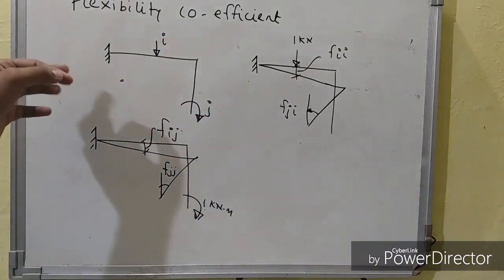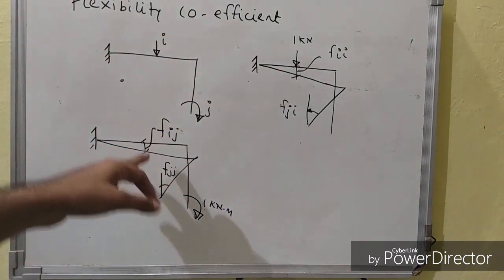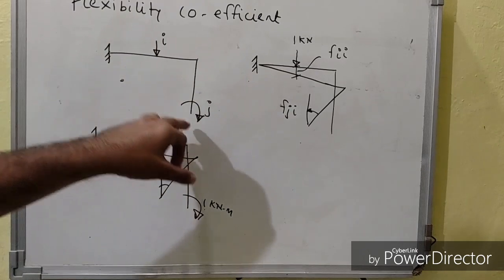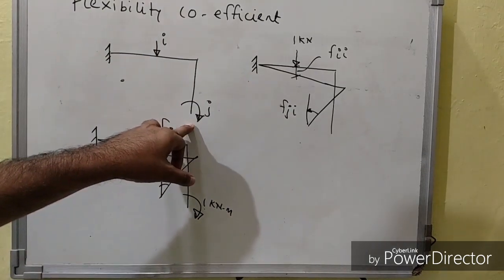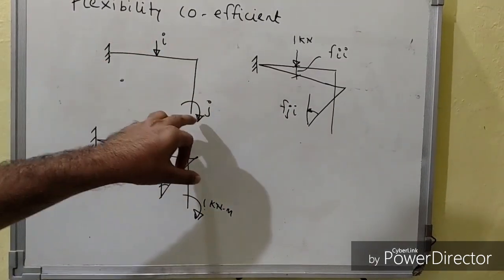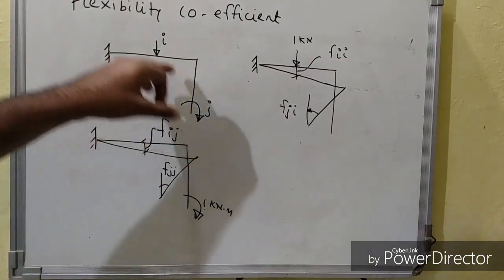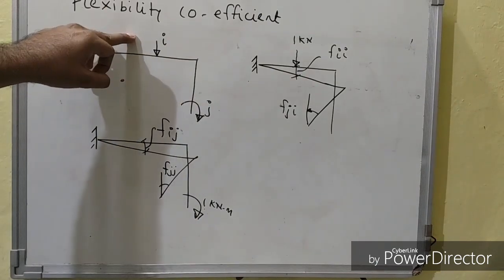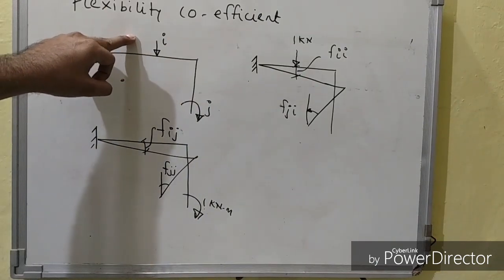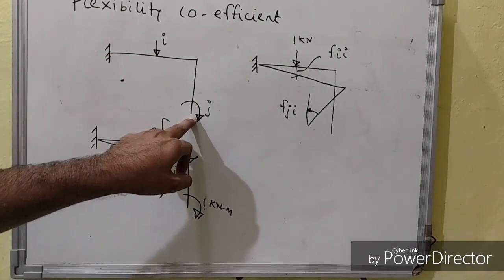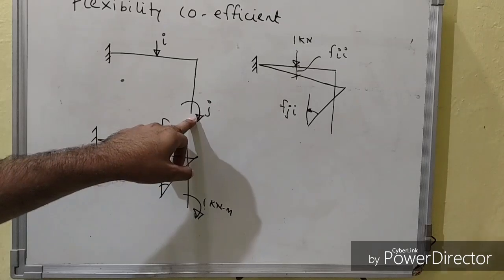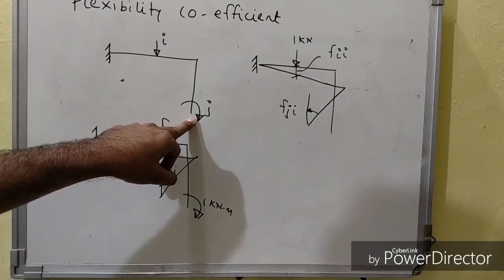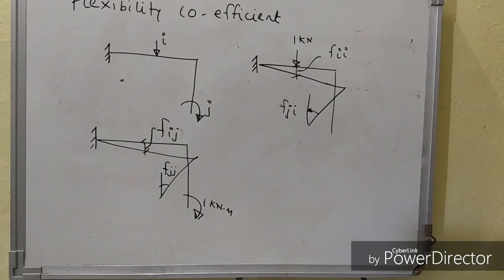To understand this, I have taken a structure with two coordinates: coordinate I and coordinate J. Coordinate I represents a force component or deflection component, and coordinate J represents a moment component or a rotation component.